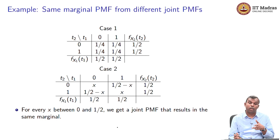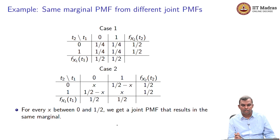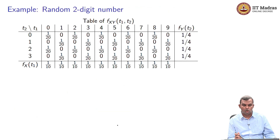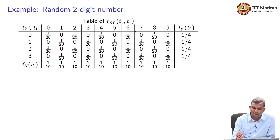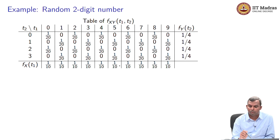This is also important in practice. Whether you have something tending towards the independent case — which is 1/4, 1/4, 1/4, 1/4 — or something else is something you have to look at very carefully. Let us go back to the random two-digit number example. You remember the joint PMF with 1/20 occurring alternatively. You can add to get f_Y(t_2) and f_X(t_1), and you see you get what is expected: 1/4, 1/4, 1/4, 1/4 and 1/10, 1/10, ...